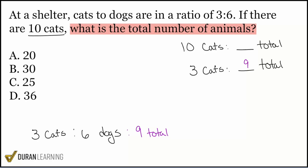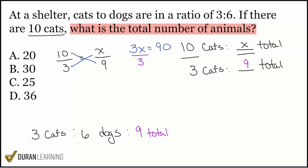Now that we're here, we can solve this — because notice we're comparing cats to total, cats to total. Now that we've got this set up, we're good to go. We'll say 10 over 3 equals x over 9. We can cross multiply and divide — 3 times x equals 10 times 9, then we divide both sides by 3.